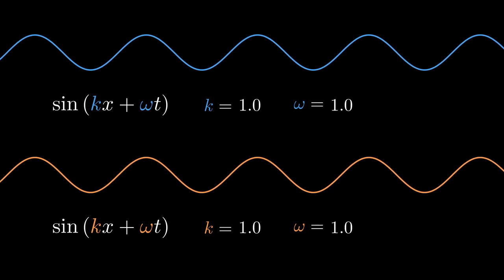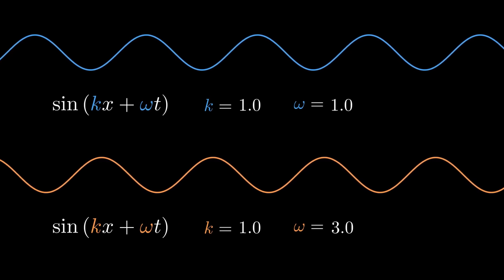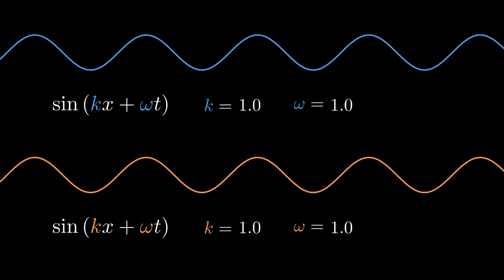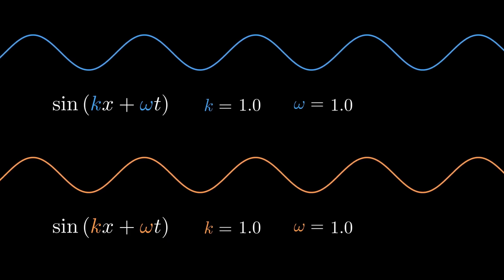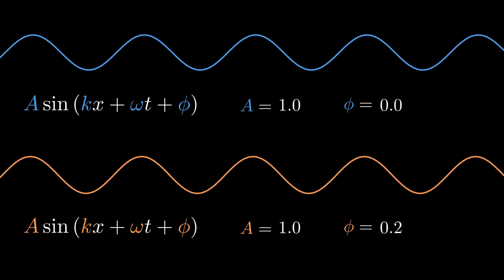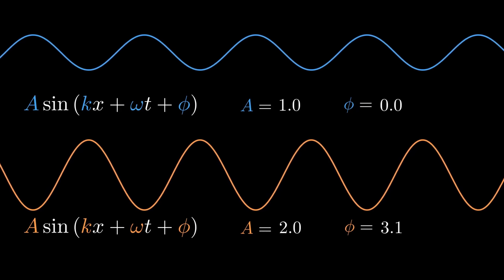If we do the same with time, we can change the period of time between two maximums of the wave at a certain point in space. This number is referred to as angular frequency. We can scale the wave by multiplying it by some amplitude and shift it by adding an initial phase to its argument.